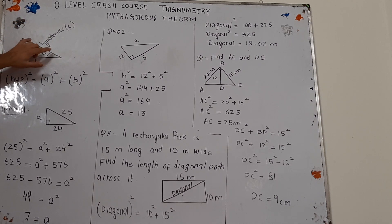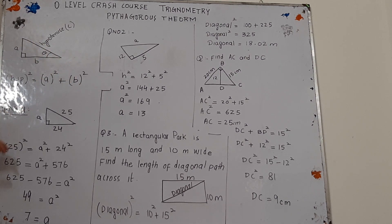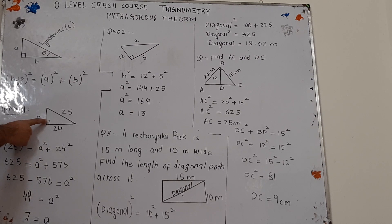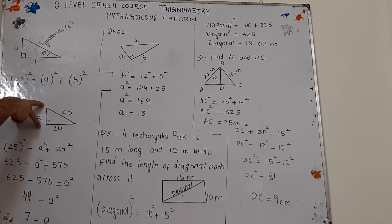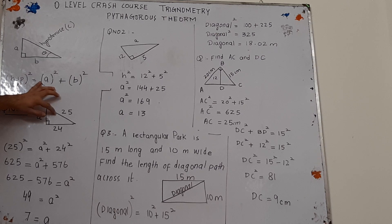So hypotenuse squared equals a squared plus b squared. Question number one: this is a right angle triangle and this angle is 90 degrees. We have to find this unknown side which is represented by the letter a. First, you need to identify the hypotenuse, which will be opposite to the right angle. So the hypotenuse is 25.